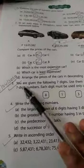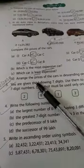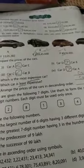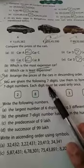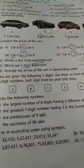So first of all we are going to read this. Question number 3 is, you are given the following 7 digits. Use them to form the smallest and the largest 7 digit number. Each digit must be used only once.